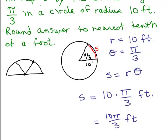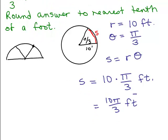And so that gives me 10 pi over 3 feet. Now this is the exact answer. That's exactly how long it is. That's exact. There's the exact answer.